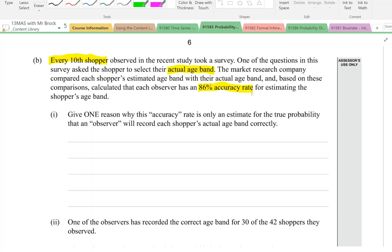Pause the video and have a think about this. What's it actually saying? It must be saying that each shopper was observed and the observer guessed their age band. If the person was actually between 25 and 29 and the observer guessed that correctly, then that would be success. If they guessed they were between say 20 and 24, then they got it wrong. And it's saying that 86% of the time, the observers got it right.